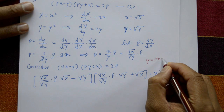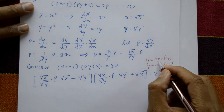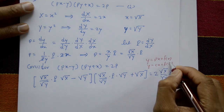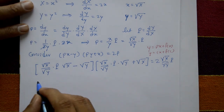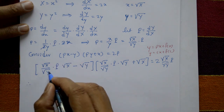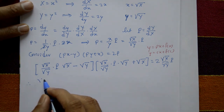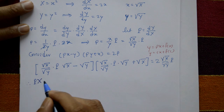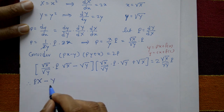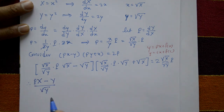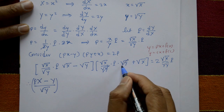Now take LCM in the first bracket. √X·√X = X and √Y·√Y = Y, so the first bracket gives (PX - Y)/√Y. In the second bracket, √Y cancels, giving (P·√X + √X). Factor out √X to get √X(P + 1).